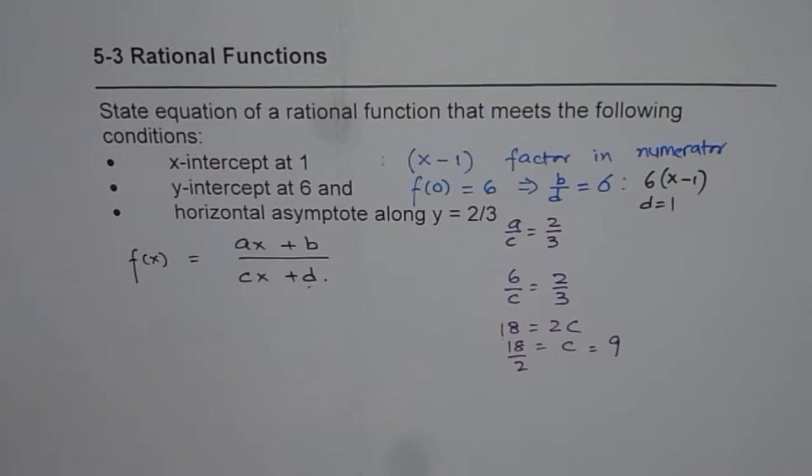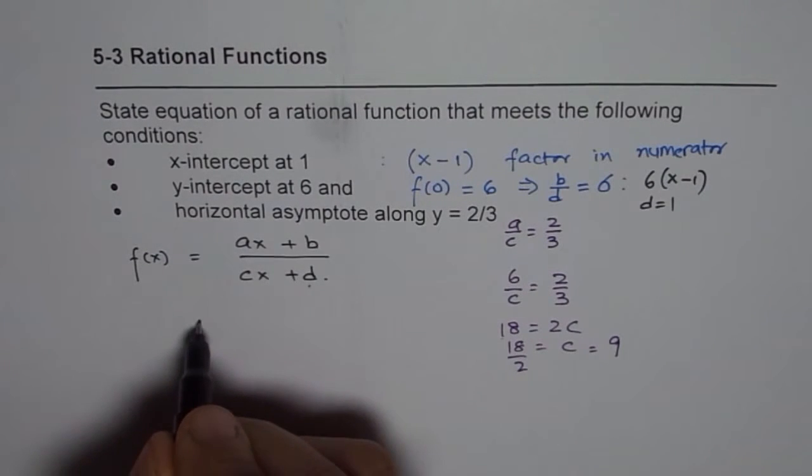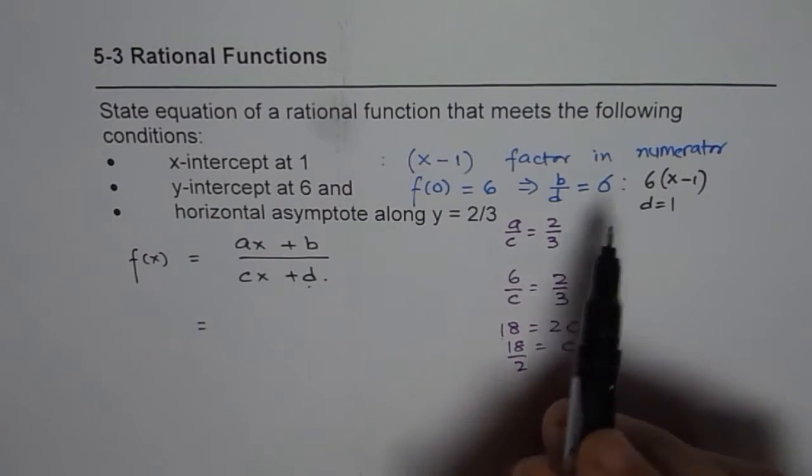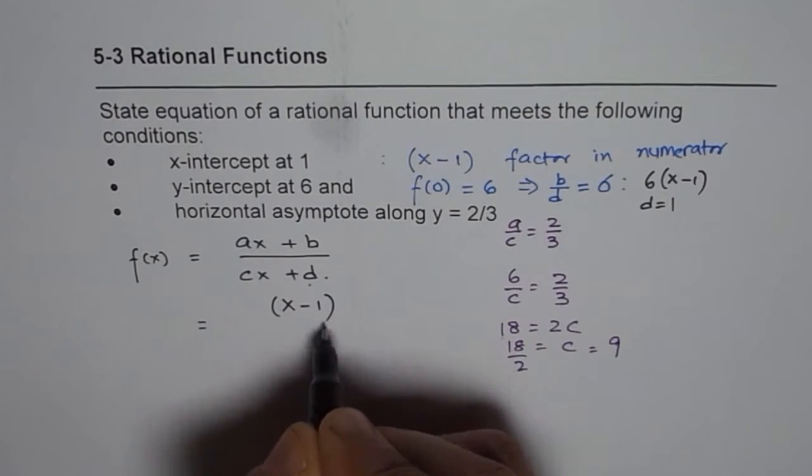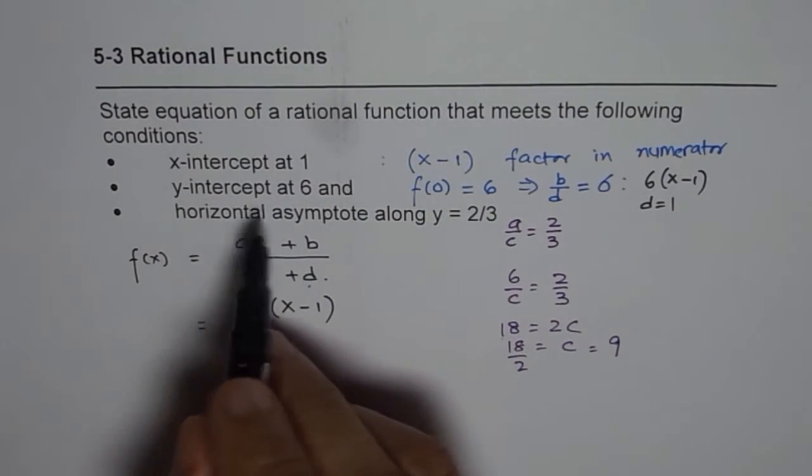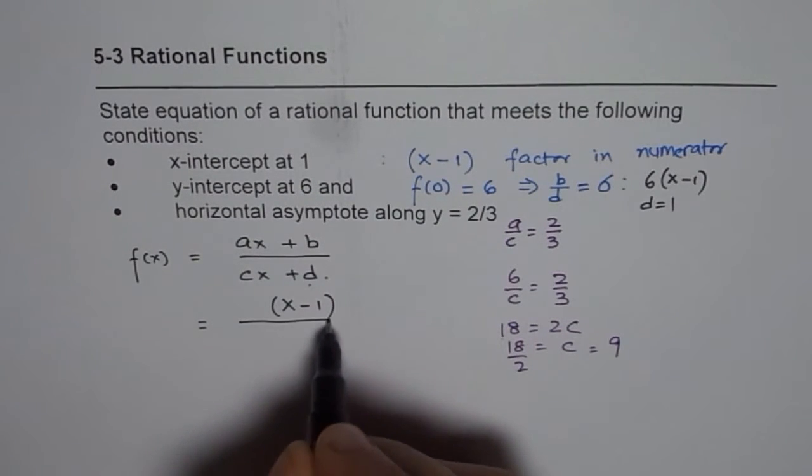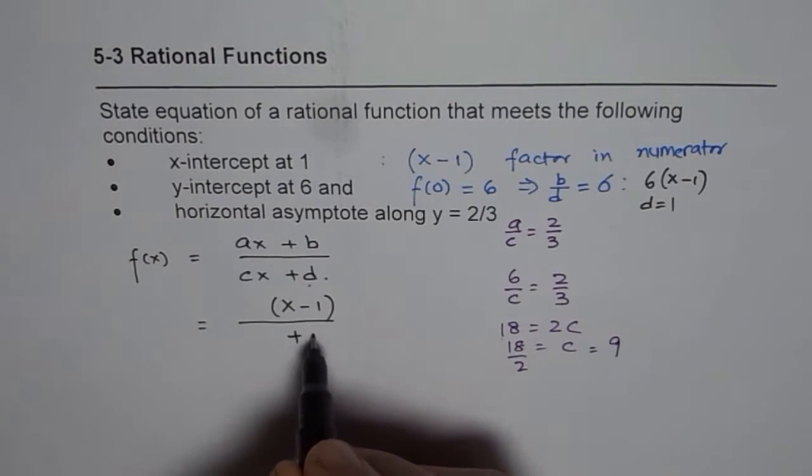So what we have here is kind of our answer. Since we have x-intercept at 1, we write a factor x minus 1. For y-intercept at 6, we are writing d as 1.